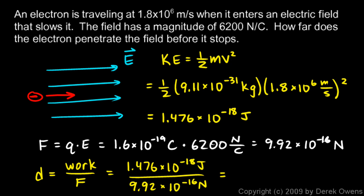That gives the distance: 0.0015 meters. We could also calculate the acceleration or other things, but in this case we were asked to find how far the electron penetrates into the field before stopping. And there we have it — 0.0015 meters, or one and a half millimeters.